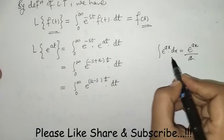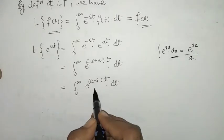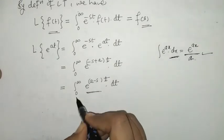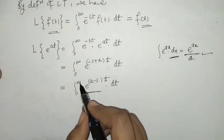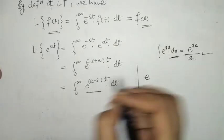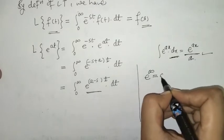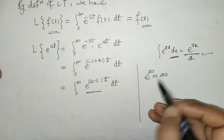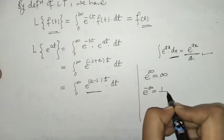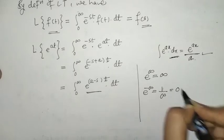This integration is of the form e^(ax) over a, integrated with respect to x. When we find its integration we get the exponential term, and we put the limit from zero to infinity. When we put the upper limit, e^(infinity) is infinity since a is a positive constant, and e^(-infinity) equals zero.